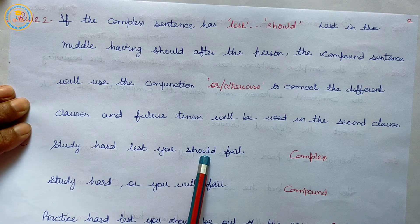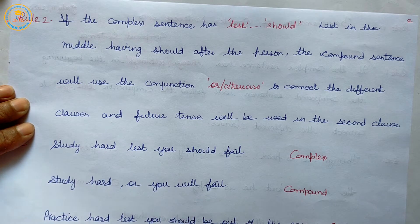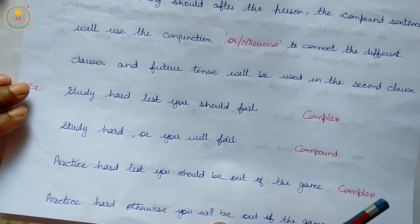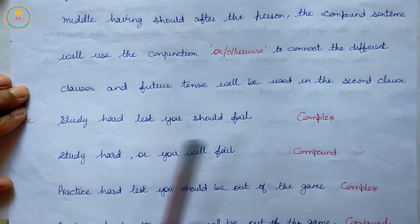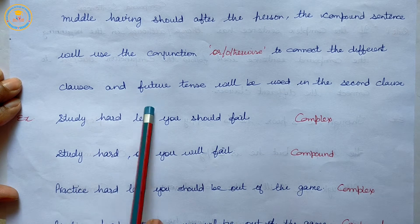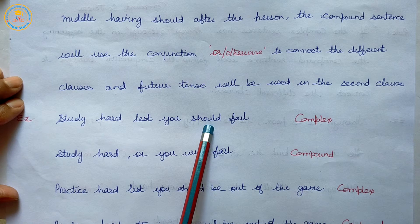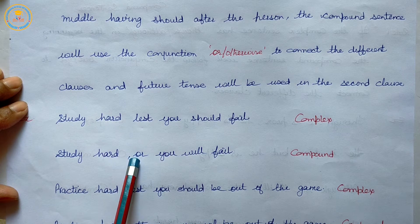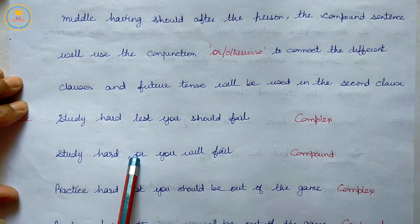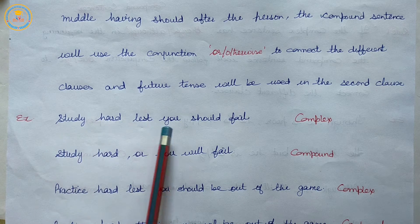In rule two, the compound sentence will use the conjunction 'or' or 'otherwise' to connect the different clauses, and future tense will be used in the second clause. For example: 'Study hard lest you should fail' becomes 'Study hard or you will fail.'